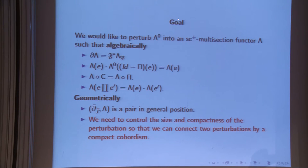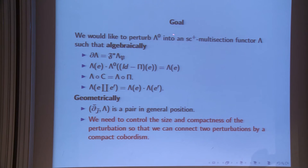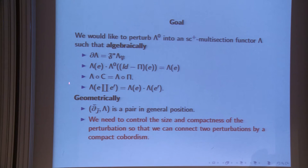The goal now is: we have a complete setup to perturb the subcategory of pseudo-holomorphic objects into some other weighted subcategory, which will be SC-smooth, so that will be enough to extract data from it. We perturb it into a functor with certain algebraic properties. Geometrically, you want this to be a pair in general position as far as the Fredholm series concerned, and there is a Fredholm functor.